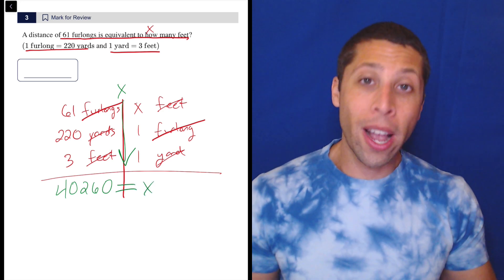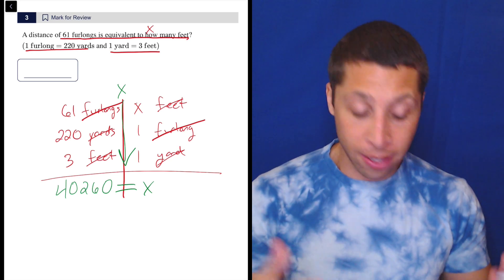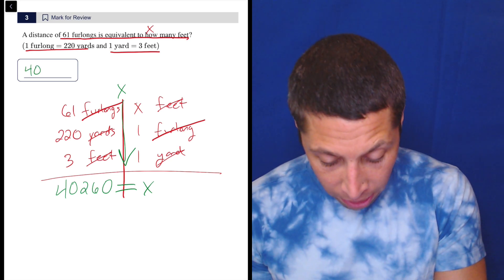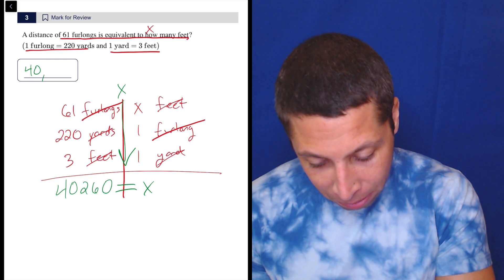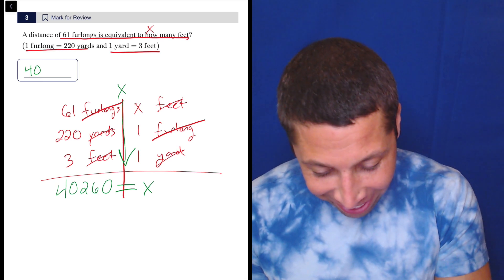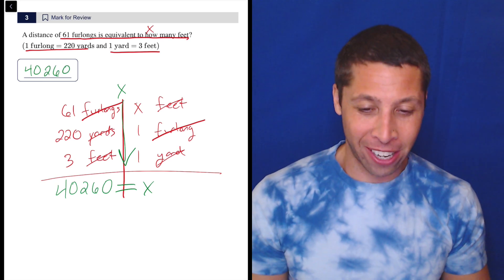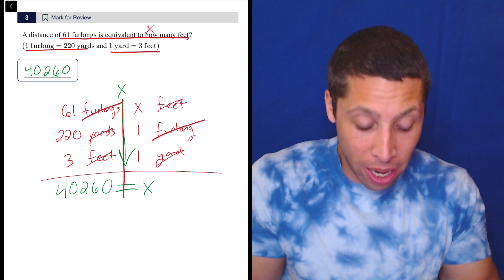So this one has no extra steps. Sometimes we do have to divide. This one didn't have it, so 40260. You don't actually enter the comma, so let me get rid of that. 40260. That is our answer. That's it. We're done.